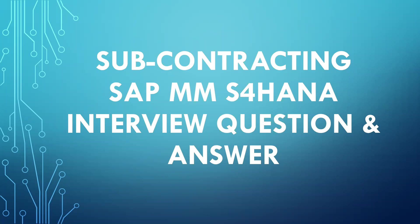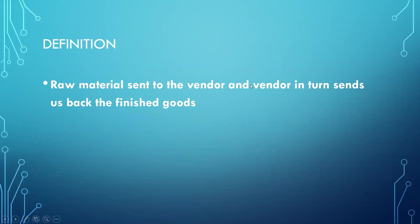The first question they may ask you is: what is the definition for subcontracting process? Raw material is sent to the vendor. The vendor in turn sends us back the finished goods. They just assemble it and send us back the finished goods. This is what the definition is all about.